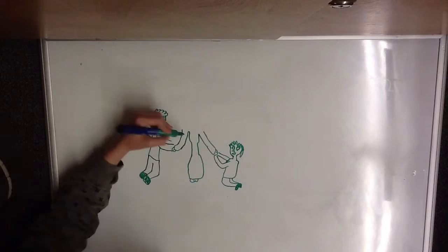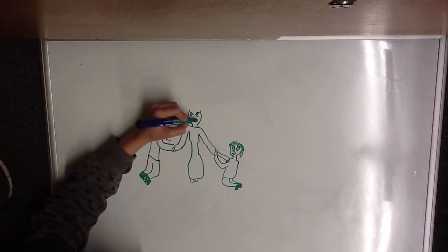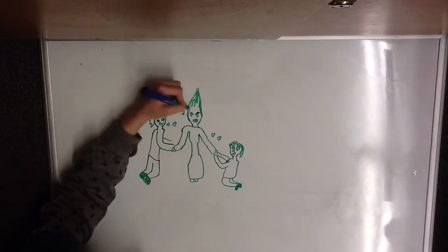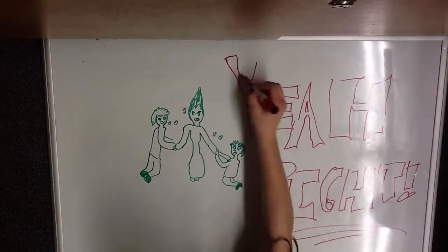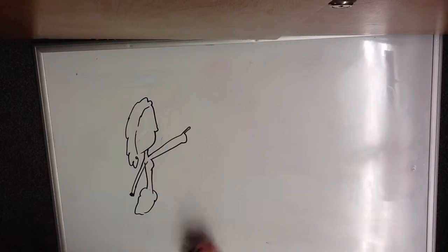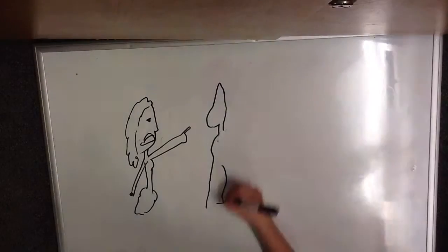Robin was later strolling through the woods casually. 'Through the forest have I gone, but Athenian found I none. On whose eyes I might approve this flower's force in stirring love.' Then he noticed Demetrius, I mean Lysander. 'Night and silence, who is here? Weeds of Athens he doth wear. This is he, my master said.'